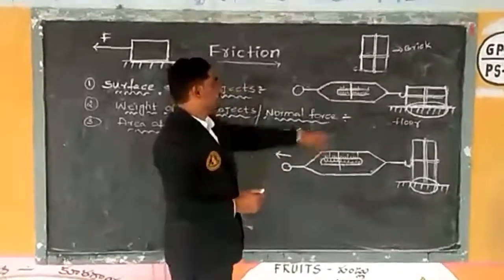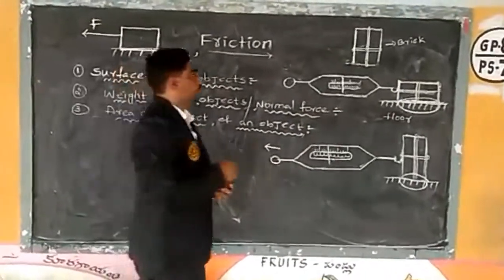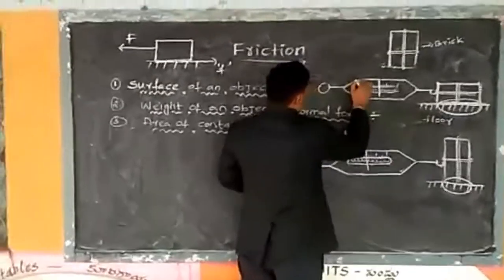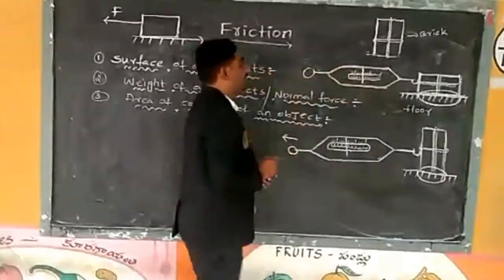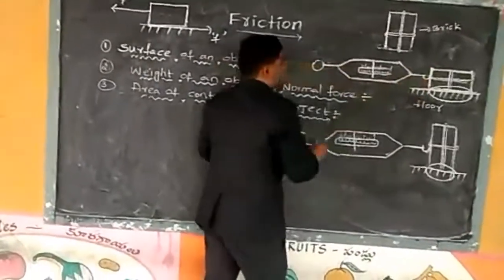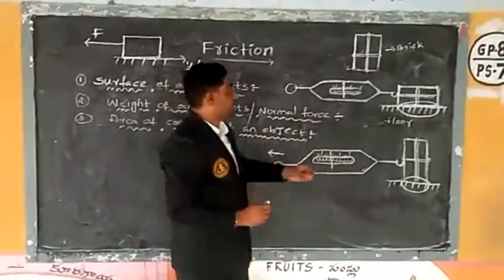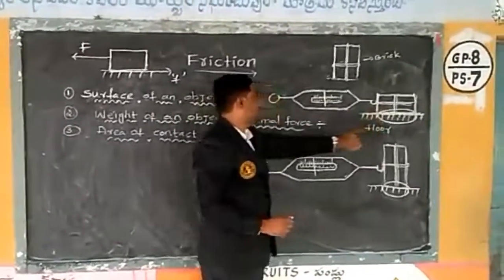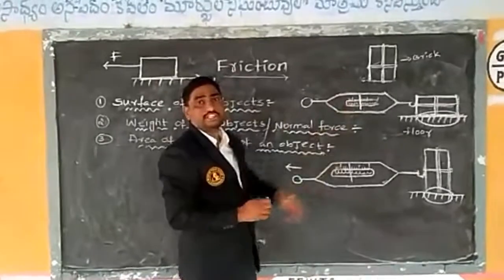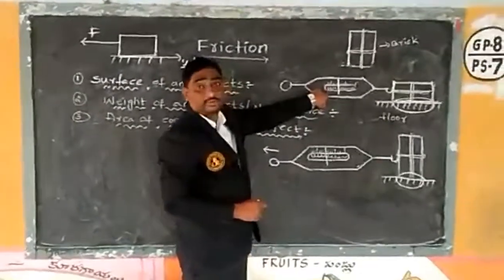After that, let me take a spring balance. A spring balance is a device used to measure the applied force. Now I am trying to pull this brick, which is placed horizontally on the surface of the floor, using the spring balance. The spring balance has a spring inside it. When we pull this brick, the spring is going to be stretched. The stretching of the spring is directly proportional to the applied force.